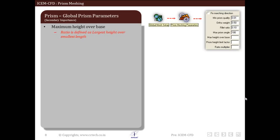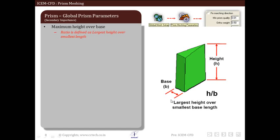Generally no value is specified as this method deletes the high aspect ratio of cells which produces pyramid elements. So largest height over smallest base length is what it is defined as.